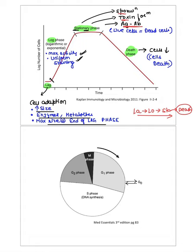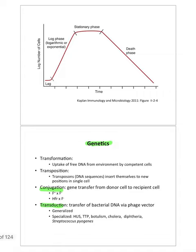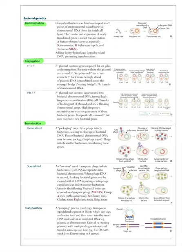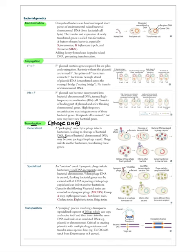Now, bacterial genetics. The three main mechanisms are transformation, conjugation, and transduction. Transduction is mediated by bacteriophage — bacteria and phage, so transduction is by phage DNA. This is very important to remember.